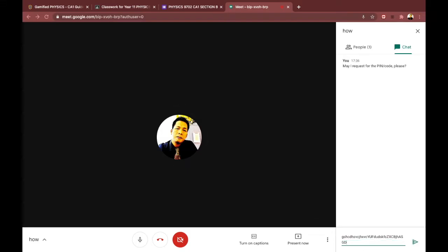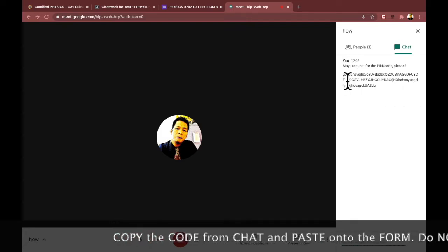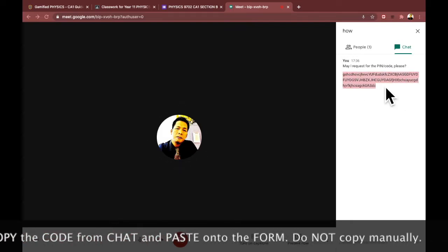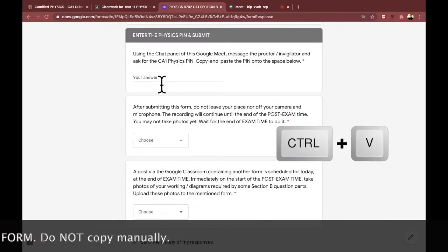The invigilator will enter the pin or code here also. What is expected from you is to copy and paste that code onto the form. Copy and paste, okay? Do not type that manually onto the form. To copy, highlight the entire code, press CTRL-C, then go back to the form and press CTRL-V to paste.